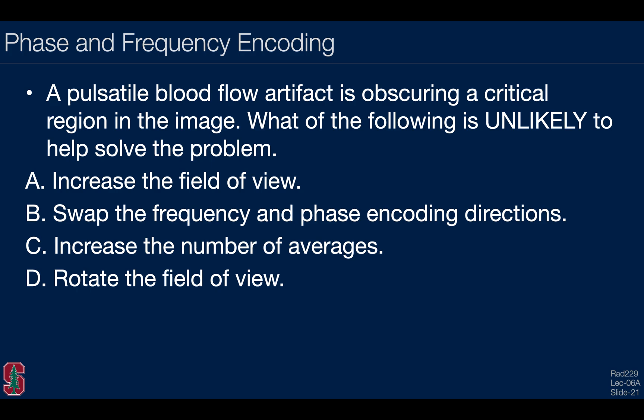Quick quiz, a pulsatile blood flow artifact is obscuring a critical region in the image. One of the following is unlikely to help solve the problem. You can pause the video while you think about this and look through the answers and I'll proceed in a second to discuss this. We could increase the field of view and that would give us more space around the object, but that seems unlikely to do anything specifically with regards to blood flow artifacts. Whereas we've seen that swapping the frequency and phase encode directions could push the artifact into a region of relative uninterest so that it overlaps with something that's not of relevance to the observation or measurement that needs to be made. We know that we could increase the number of averages and through signal averaging, we can push down incoherent artifacts. And it may, in fact, actually help to rotate the field of view slightly. So rather than swapping phase and frequency, sometimes just rotating by 10 or 30 degrees is sufficient. In this case, I would say increasing the field of view is not going to specifically help.